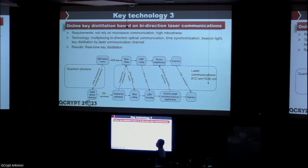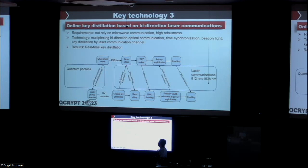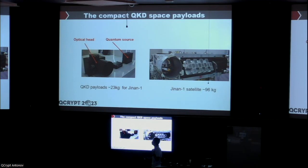With the high-precision tracking link between satellite and ground station, we also use wavelength-division multiplexing for optical communication. After photon generation and detection, we need key reconciliation and post-processing to get the final key, so we use laser communication to do this and can generate the final key in real time when the satellite passes over the ground station. The downlink wavelength for quantum photons is 850 nm, for the optical key link about 1538 nm, enabling real-time key distribution.